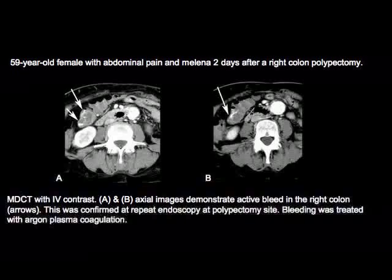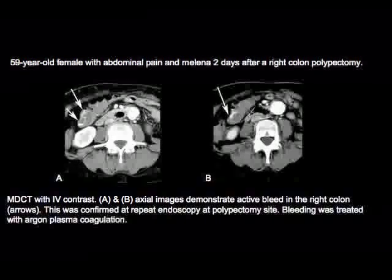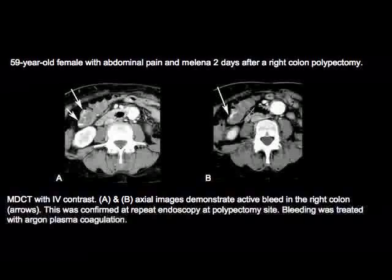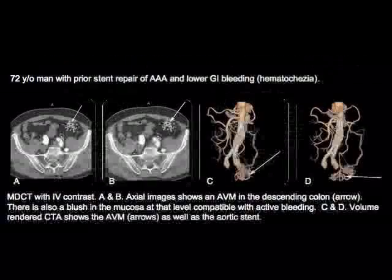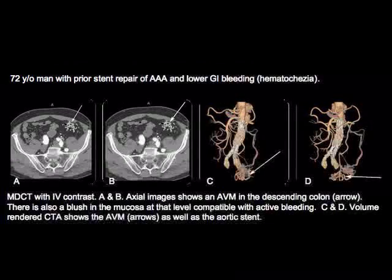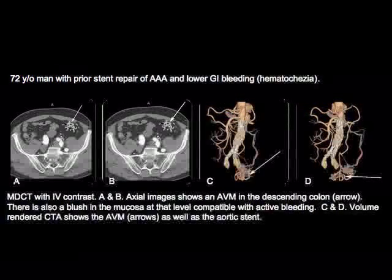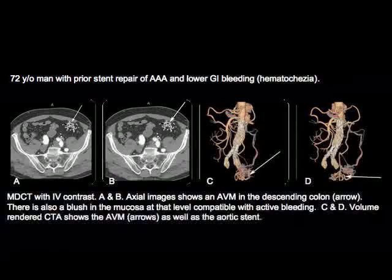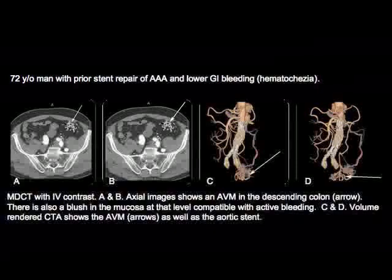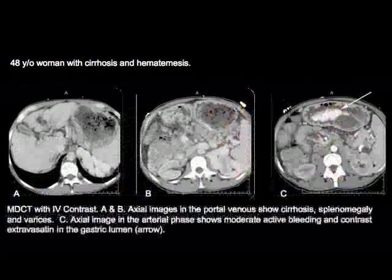This next case is a patient two days post right colon polypectomy — look at that bright blush, very clearly active bleeding in the right colon at the polypectomy site. The patient was treated conservatively. Another case: GI bleeding with diverticulitis, showing an AVM in the descending colon — the blush and swirl of the AVM are very nicely demonstrated on these images.